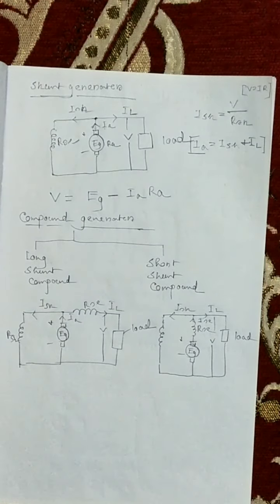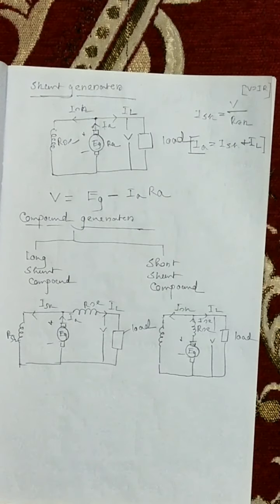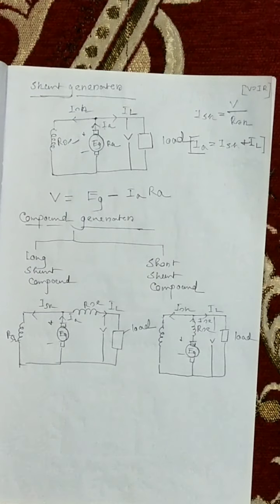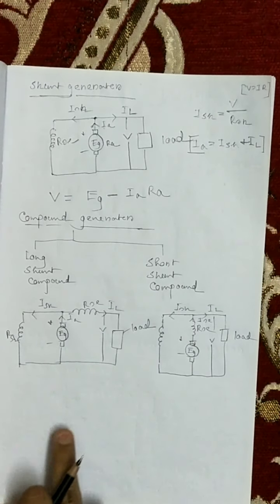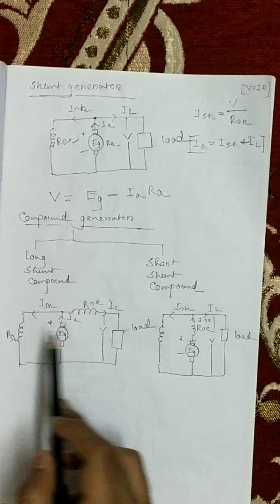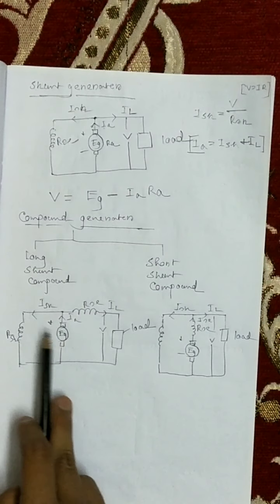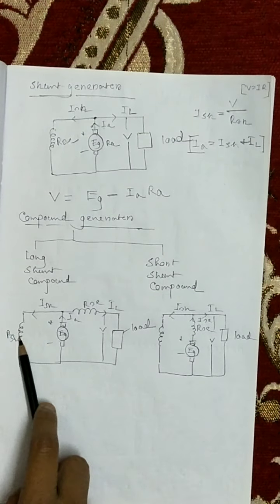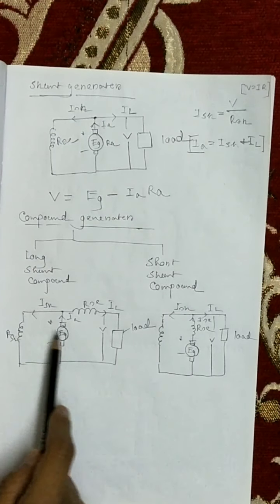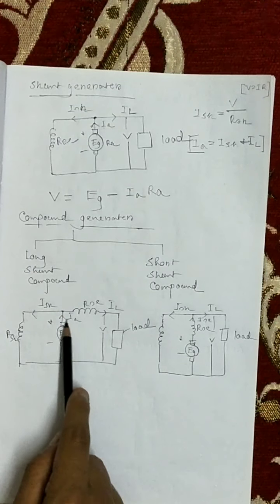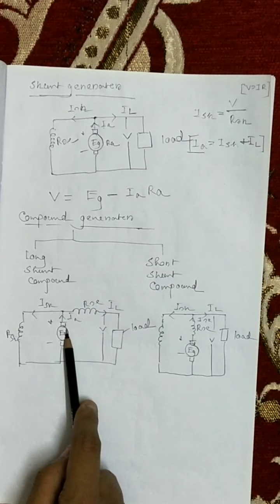In a compound generator, there are two sets of field winding on each pole — one is series and another is parallel with the armature. In a short shunt compound generator, only the shunt field winding is parallel with the armature winding. In a long shunt compound generator, the shunt field winding is parallel with both the armature winding and the series field winding.